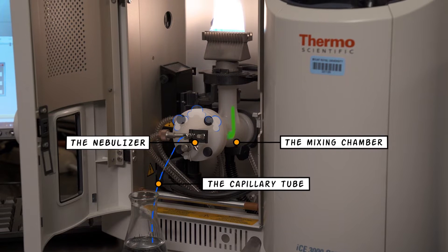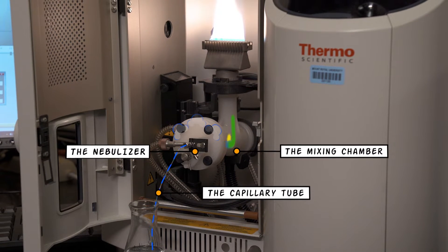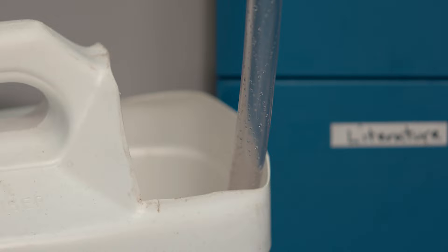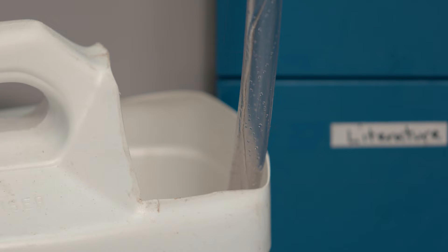The mist then moves into a mixing chamber, where it comes into contact with the fuel, in this case acetylene gas, and compressed air, which contains oxygen. At this point, 90% of the sample will just end up in the waste bucket, and only 10% will be swept into the burner.